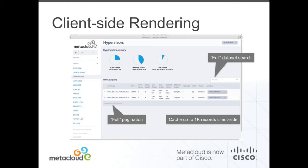This has given us a number of advantages. One of the things we were able to do — because we know there are only ever going to be 500 hypervisors in a particular availability zone — we're actually able to cache the full data set on the client-side. That means we can have a very interactive user experience. For the first time, users can actually do a filter in Horizon and query the entire data set based on whatever terms they enter. We also provide full pagination across the data set, and the speed at which pages are navigated is very, very fast.